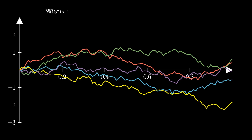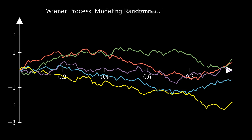In finance, we use the Wiener process to model the unpredictable part of stock price movements. It captures the idea that prices are constantly being pushed around by random market forces.